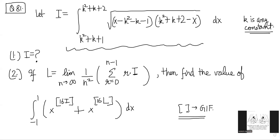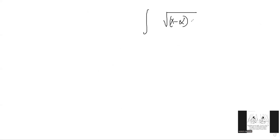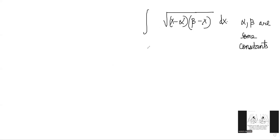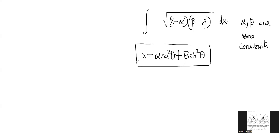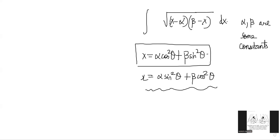Looking at the integral, you have the square root of (x − α)(β − x) dx, where α and β are some constants. Whenever you have a situation like this, the substitution that works is x = α cos²θ + β sin²θ. You can also write it as α sin²θ + β cos²θ — it doesn't matter. Remember the pattern: under the root you have two linear factors, x − α and β − x, and this substitution will solve the integral. Otherwise it becomes quite annoying.